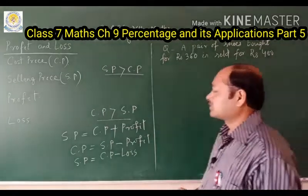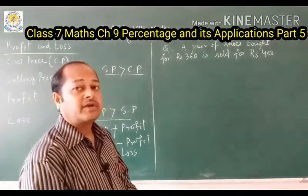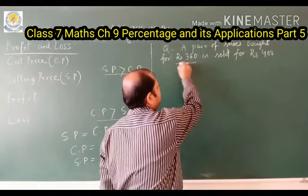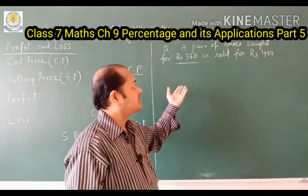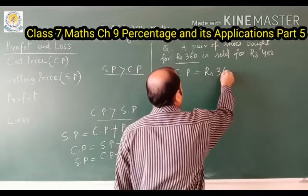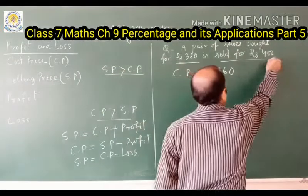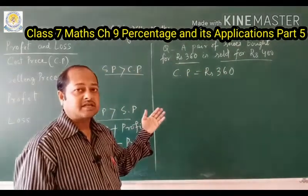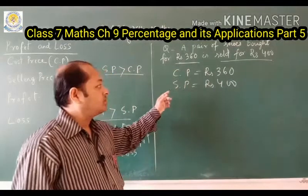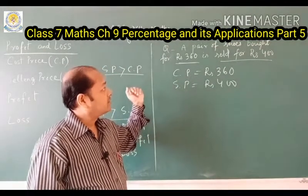Now let us see a question. A pair of shoes bought for 360 rupees is sold for 400 rupees. In this question, what is the cost price? It is bought for 360 rupees, so Cost Price = 360 rupees. It is sold for 400 rupees, so Selling Price = 400 rupees.